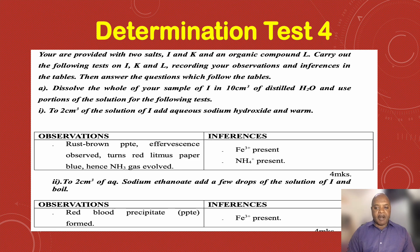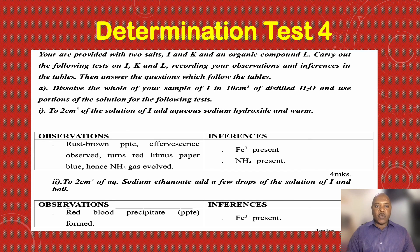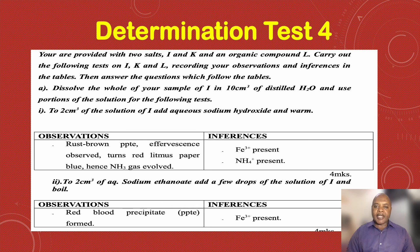Part A: dissolve the whole of your sample of I in 10 cm³ of distilled water and use the solution for the following tests. Test 1: to 2 cm³ of the solution of I, add aqueous sodium hydroxide and warm.